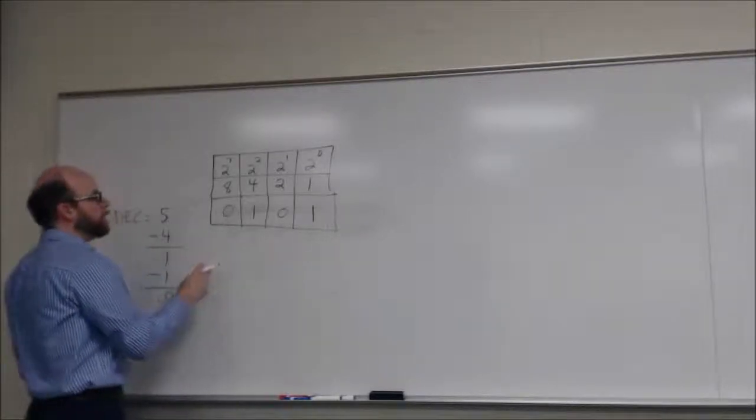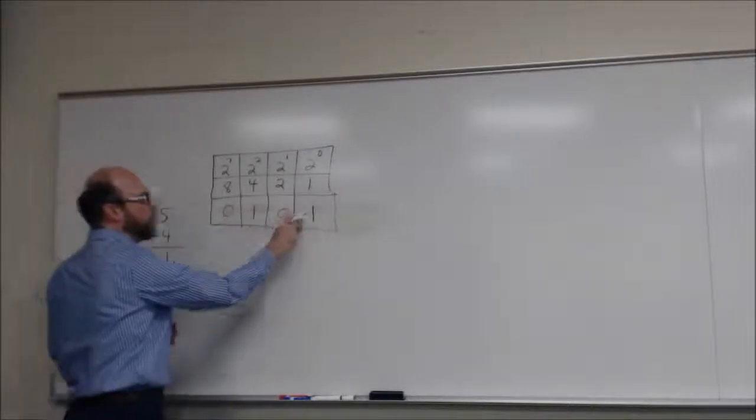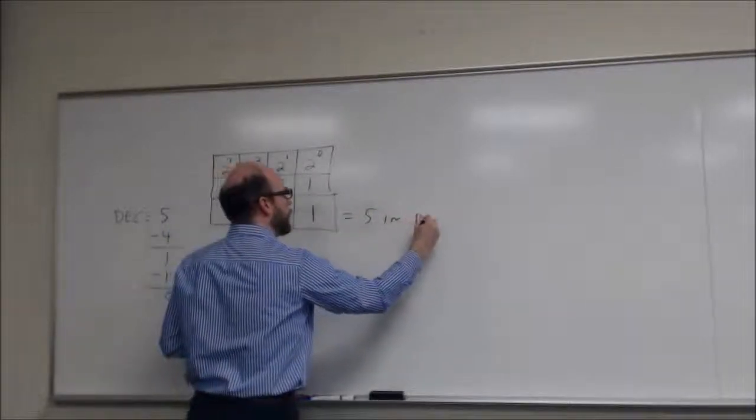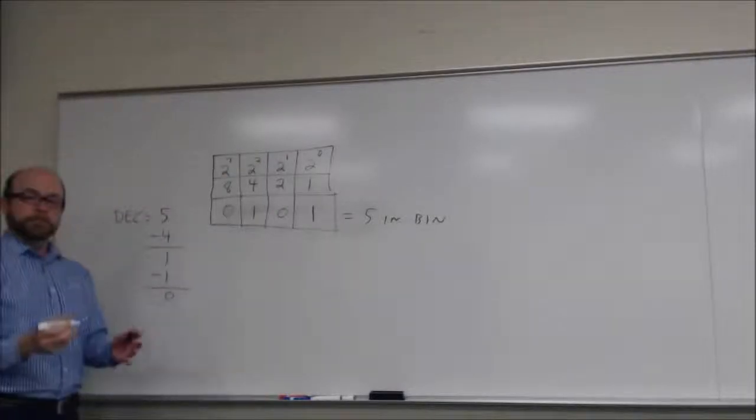So the binary value of five is zero, one, zero, one. That's what our answer is, five in binary. Okay, makes sense.